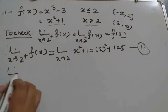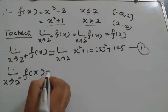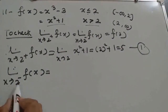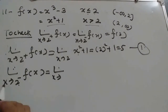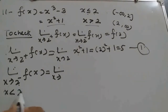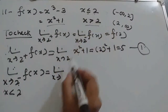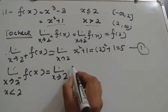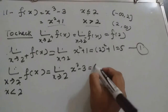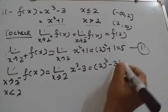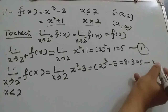Now we find the left-hand limit, x tends to 2 minus. 2 minus indicates the value of x is less than 2. So we use the first function, where x is less than 2. We substitute the value: 8 minus 3, that is 5. This is equation 2.